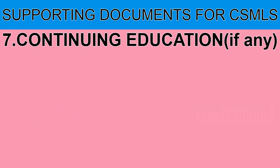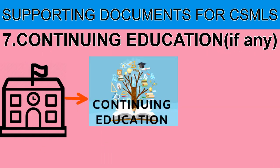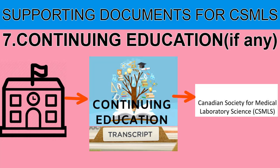The last requirement is your continuing education. Contact your educational institution and ask them to send an official transcript directly to CSMLS for any MLT or MLA courses taken within the last five years, such as refresher courses. If you are currently taking a course, you should also send proof of enrollment along with an expected date of completion.